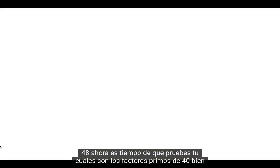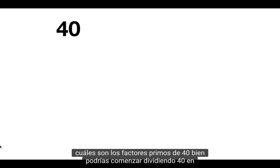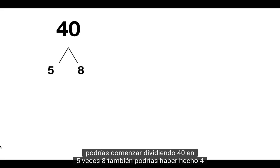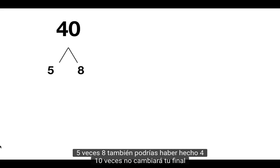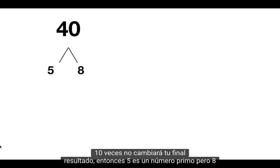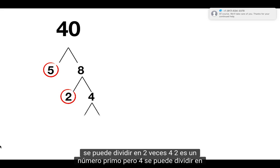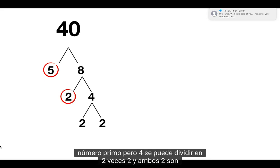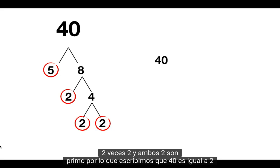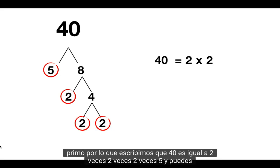Now it's time for you to try on your own. What are the prime factors of 40? Well, you could start by splitting 40 up into 5 times 8. You could have also done 4 times 10 — it won't change your final outcome. Then 5 is a prime number, but 8 can be split up into 2 times 4. 2 is a prime number, but 4 can be split up into 2 times 2. And both of these 2's are prime.